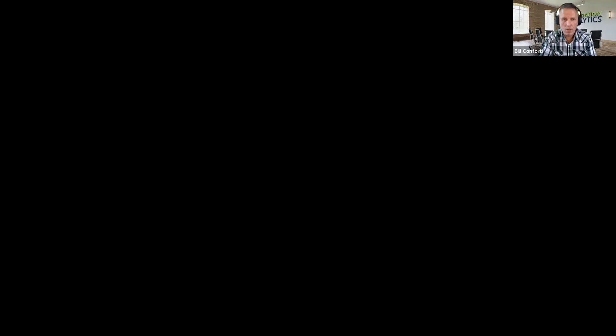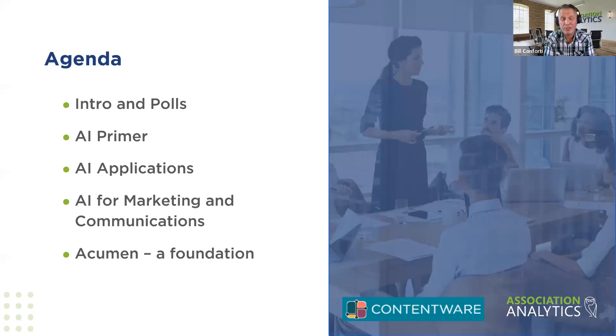Here's our agenda. As usual, we'll start with some very brief introductions and one poll today. Then we're going to turn things over to Mitch, who's going to give a primer on AI — a really good introduction on all the key things we need to know. We'll talk about applications of AI, relating that to the association space in particular. Mitch is really an expert on marketing and communication, so we'll spend a good part of the session on the AI piece, and then wrap it up with a bit of discussion on Acumen.